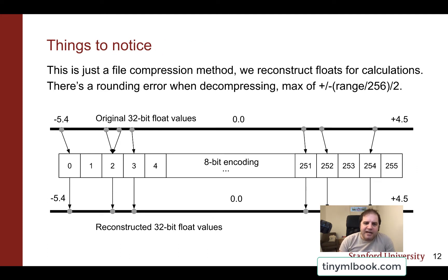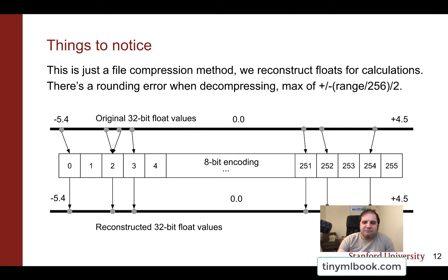To be clear, I'm not talking about doing anything different in the actual calculations. In the code I was looking at, the only thing I cared about was the file size. All of the math was still happening on the reconstructed 32-bit float values. It was just a way of storing the values at rest in a much smaller form and then reconstituting them before we actually wanted to do the math on them. There is this rounding error — something around the range over 256 divided by 2 — that you'll end up with when reconstructing the values.